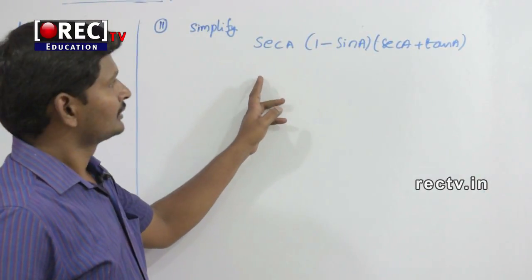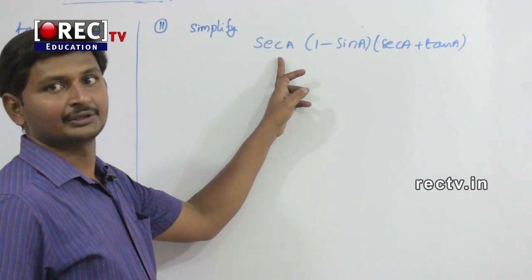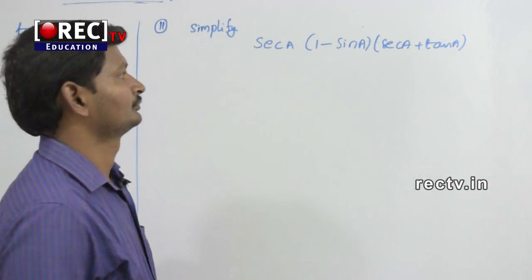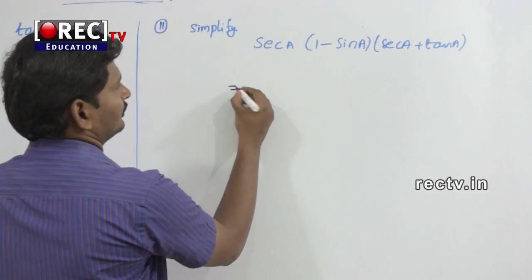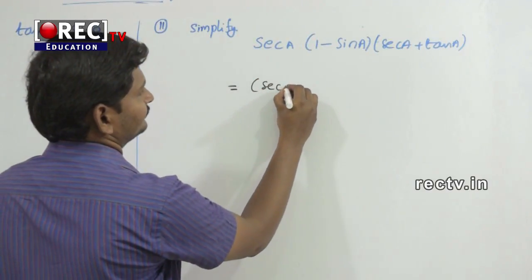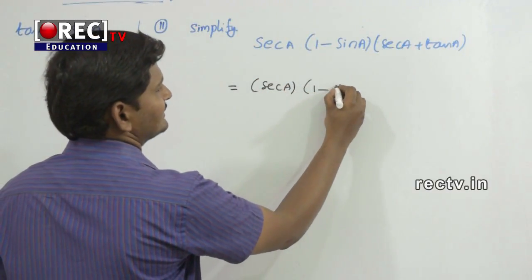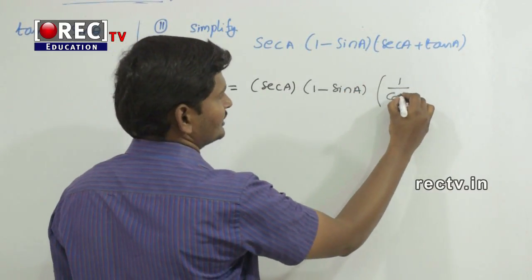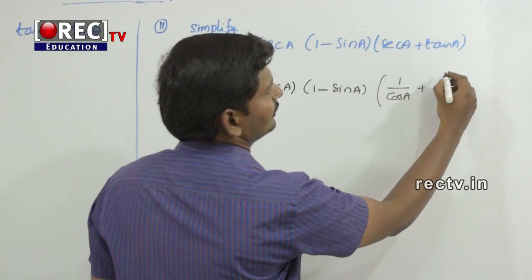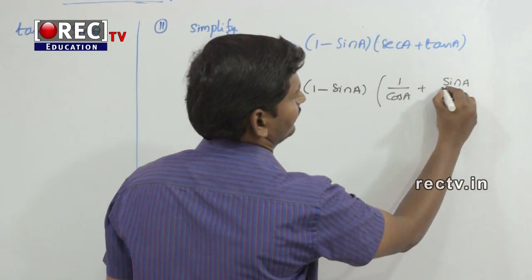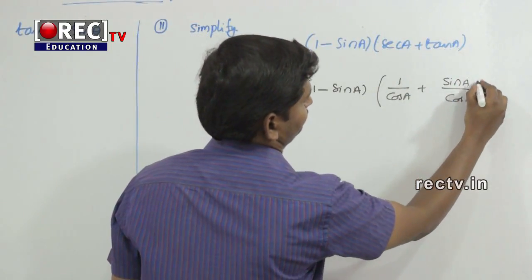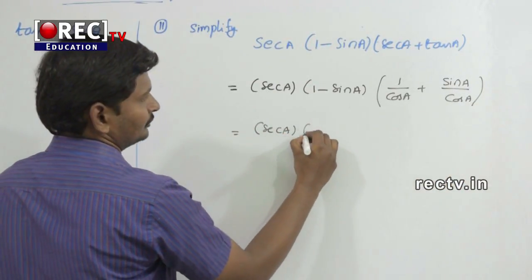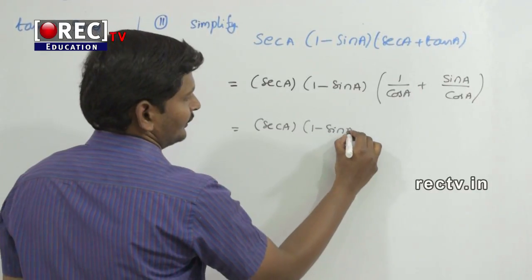Question number 11. Simplify sec a into 1 minus sin a into sec a plus tan a. We write sec a into 1 minus sin a, and then 1 plus sin a.